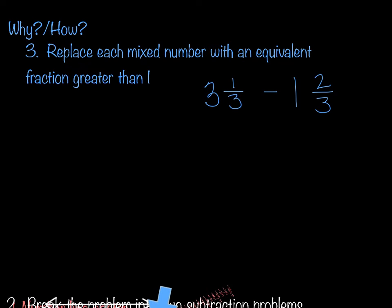Our last method is to replace each mixed number with an equivalent fraction greater than 1. We're wanting to take that mixed number and turn it into what we used to call an improper fraction. What we're going to do is multiply 3 times 3, and then add the 1 on top. So 3 times 3 gives me 9, plus 1 gives me 10. So 3 and 1 third is equal to 10 thirds.